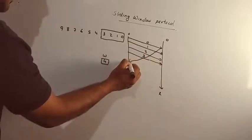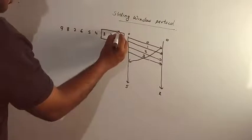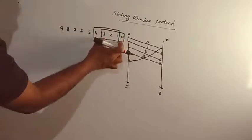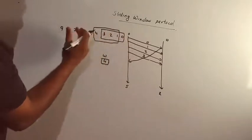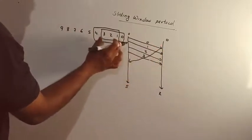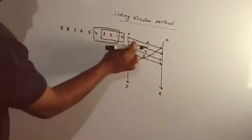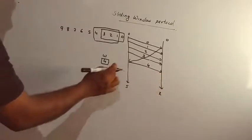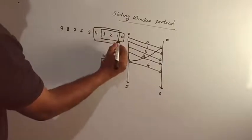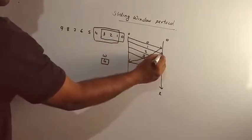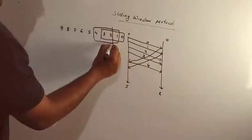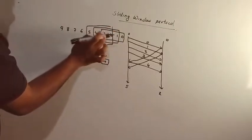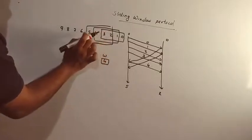What happens when we receive the acknowledgement? The first frame is acknowledged and frame 0 is cleared from the window. The window then slides to select the next position. The window now contains frames 2, 3, 4, and 5. The 5th frame enters the window.